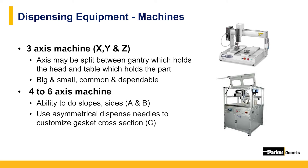Greater than three-axis machines add rotation around the three primary axes — A, B, and C — which are the pitch, yaw, and roll, to move the parts through space. By adding rotation around two axes on the part, you can dispense parts at an angle. By adding C, the third axis of rotation, you can actually use an asymmetrical needle tip, allowing for custom shapes to be added to the gasket cross-section, or dual dispensing of conductive and non-conductive gaskets.